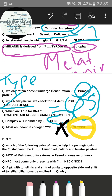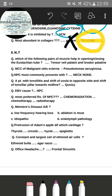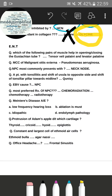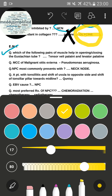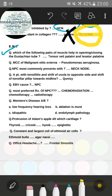Now talking about ENT — the hole and sole subject where Medi Simplified began. The first ENT question was: which pair of muscles helps in opening and closing of the Eustachian tube? The correct answer was tensor veli palatini and levator veli palatini.